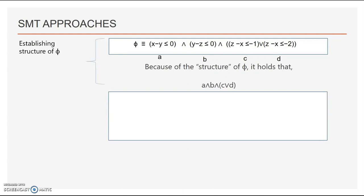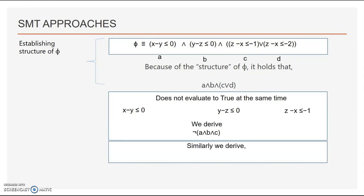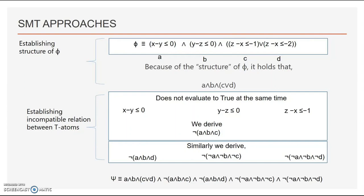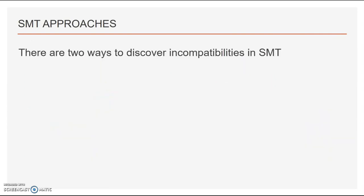Also, certain terms do not hold true together. So therefore we derive clauses. This is known as establishing incompatible relation between T atoms. All these clauses together form CNF and this is what is fed into the SAT solver. There are two ways to discover incompatibilities in SMT: first is eager approach and second one is lazy approach.